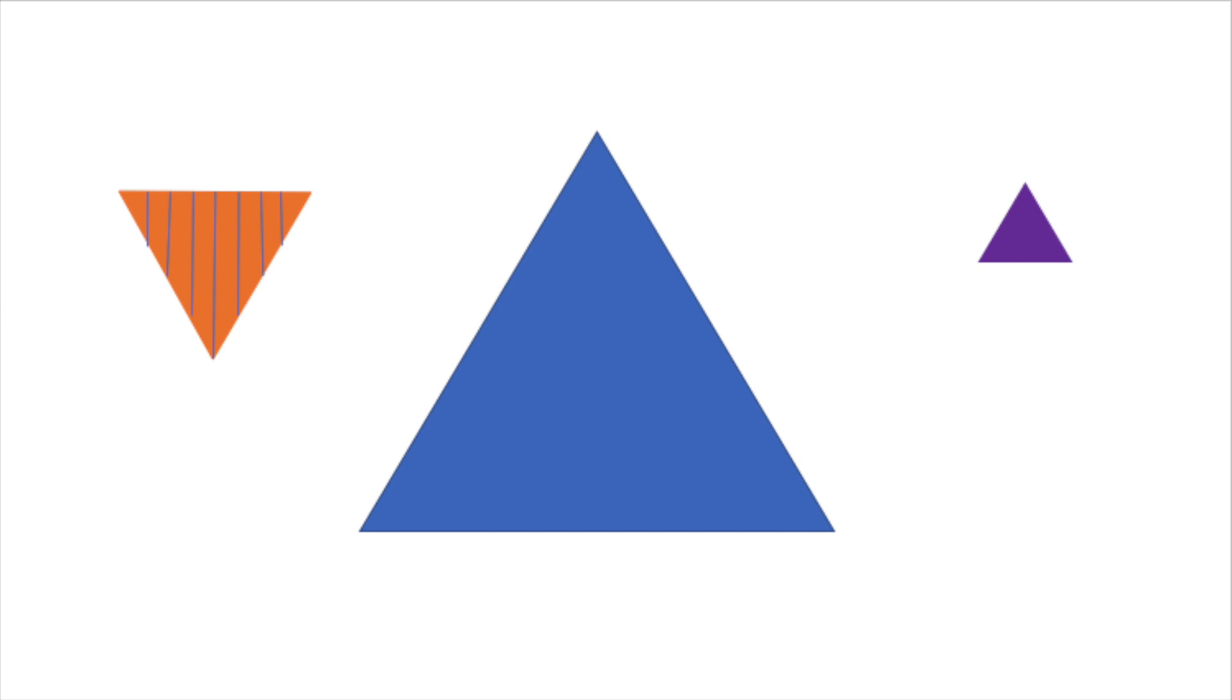All three of these shapes are triangles, but they have different non-defining attributes such as color, size, pattern, and direction. Even though the purple triangle is a different size than our blue triangle, they are still both triangles. And even though the orange triangle has a different direction since it points down, and it has a pattern, it is still a triangle just like ours.